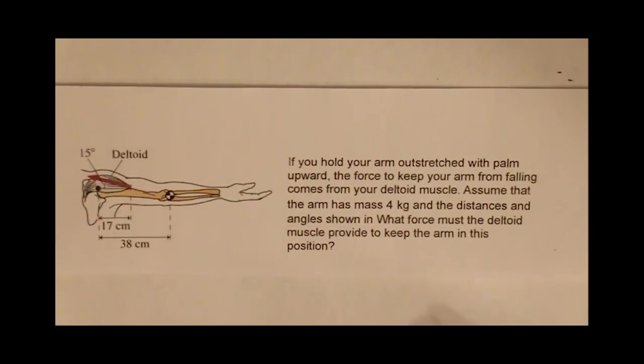We are asked to find out the force that the deltoid muscle exerts, but in order to find that, we have to employ two torques about this point here, which is at the shoulder. The distance from the shoulder to the center of gravity of the arm is 38 centimeters, and the radius from the shoulder to the deltoid muscle is 17 centimeters.